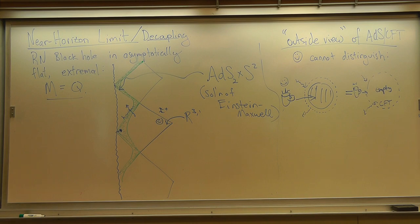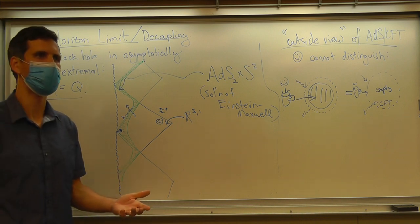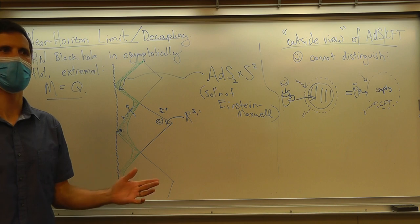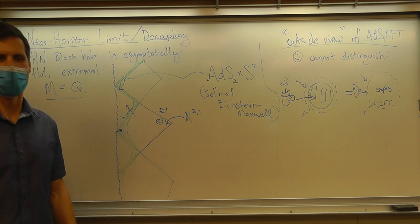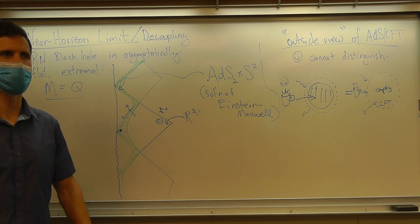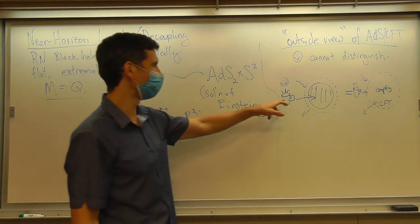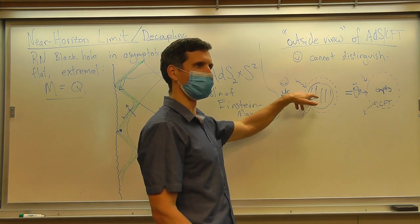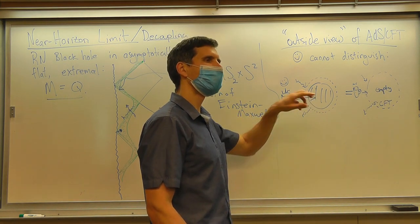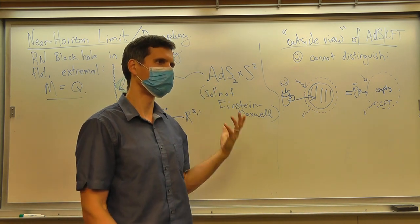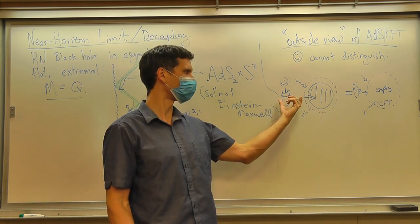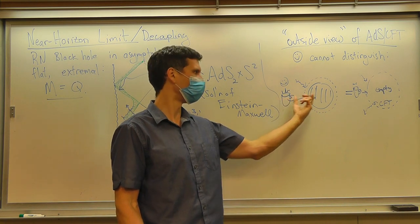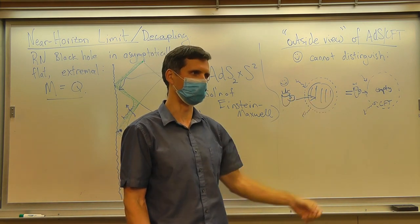If you didn't do it slowly and just dropped something in, that's the same as the infinite blue-shift issue. It would hit with a huge amount of energy, creating a large back reaction, and then you can't use it as a CFT description. It has to be a very small amount of energy — then you'll be able to describe it from the CFT point of view.